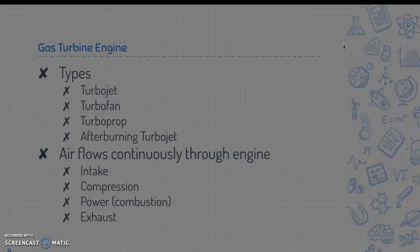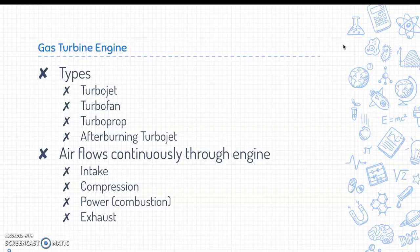Now let's look at gas turbine engines. The types include turbojet, turbofan, turboprop, and afterburning turbojet. Air flows continuously through all of these engines, and every one has an intake, compression, power or combustion, and exhaust stage.